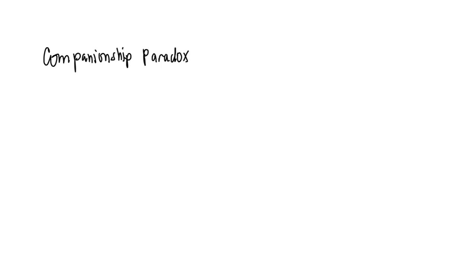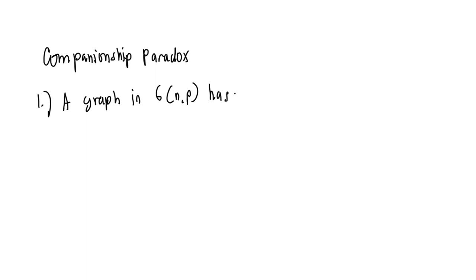We have the companionship from docs. Here, for the first part, we have a graph G(n,p) and it has an average number of edges.